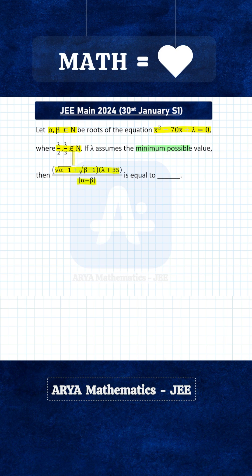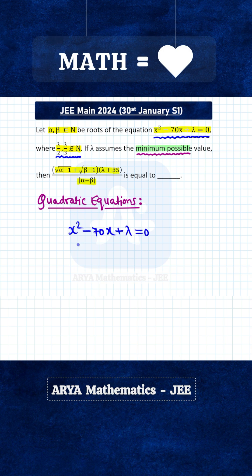Now this is a very interesting problem from quadratic equations. The given quadratic equation is x squared minus 70x plus lambda equals 0, and the roots of this quadratic equation in x are alpha and beta. Alpha and beta are natural numbers.